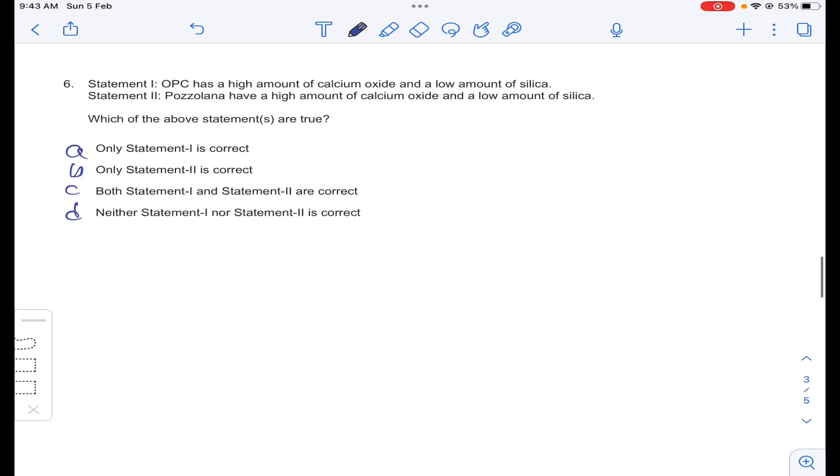Coming to question number 6, OPC has high amount of calcium oxide and low amount of silica. OPC calcium oxide, low silica. This is a correct statement. And Pozzolana having high amount of calcium oxide, low amount of. This is the wrong statement. Pozzolana is not having high amount of calcium oxide. Only statement 1 is correct. Answer A for question number 6.